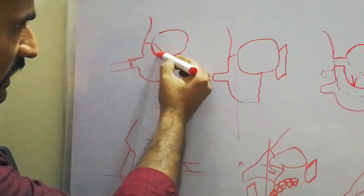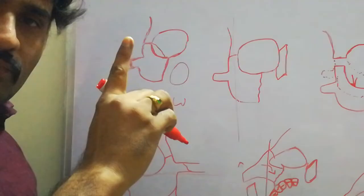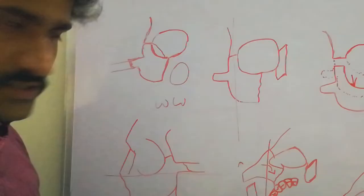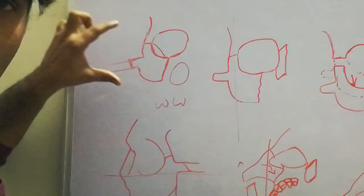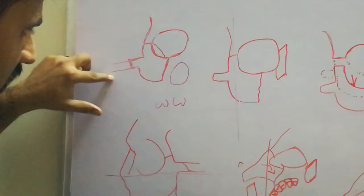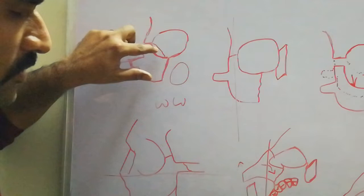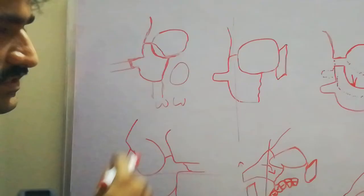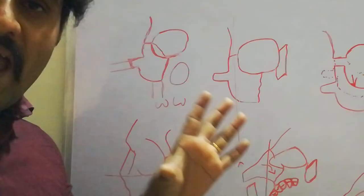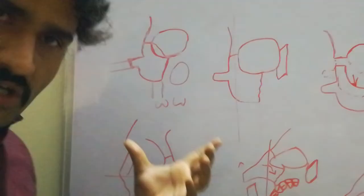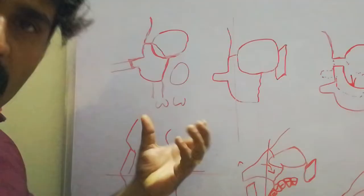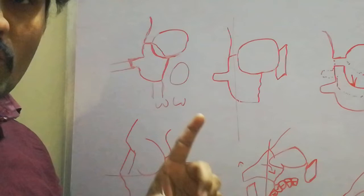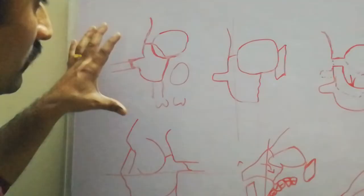The zygomatico-sphenoid bone forms the zygomatico-sphenoid suture, which is one of the most important sutures for reduction. These are the four processes of the zygomatic bone. The important landmarks are the frontozygomatic suture, the zygomatic arch, the zygomatico-maxillary buttress, and the inferior orbital rim. The zygomatico-maxillary buttress is a vertical pillar of the facial structures.